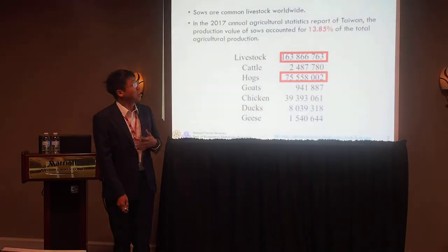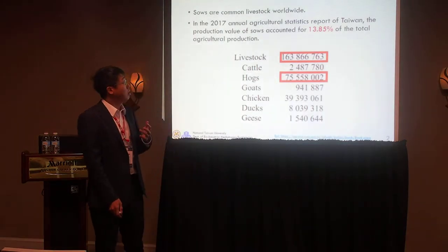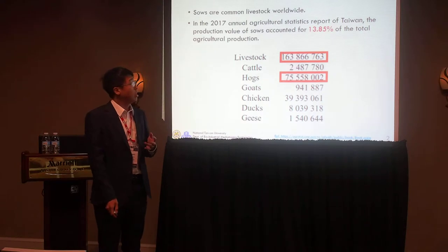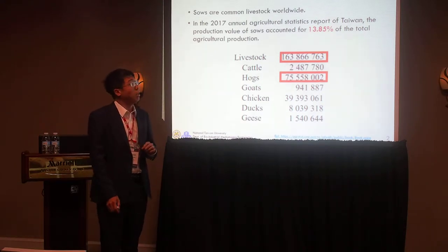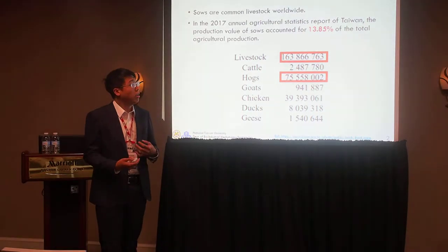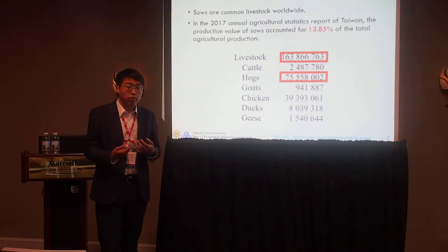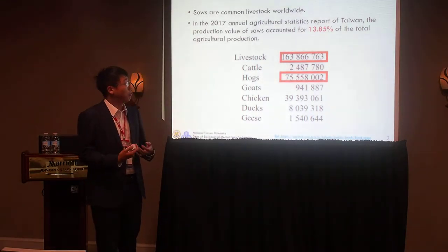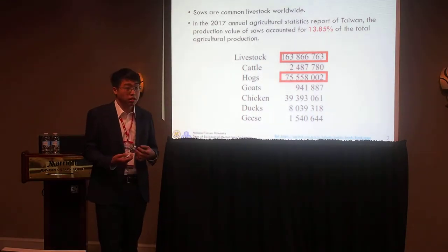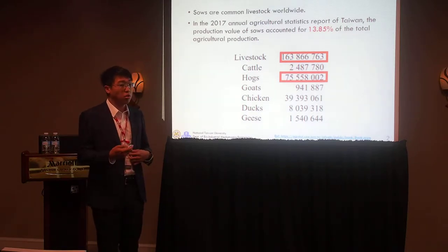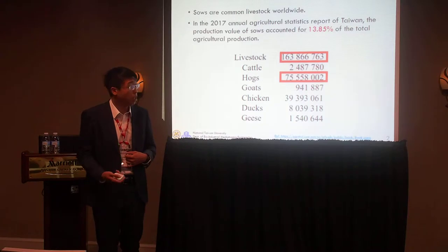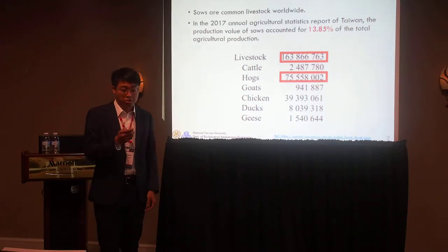Sows are a common livestock worldwide. In the 2017 annual agriculture studies report of Taiwan, the production failure of sows accounted for about 40% of the total agriculture production, and the failure of stock accounted for 46% of the total livestock agriculture production.